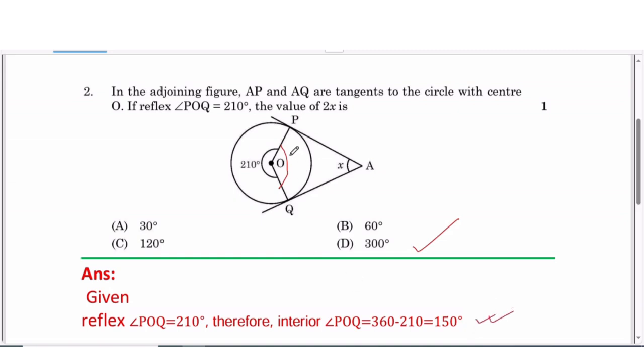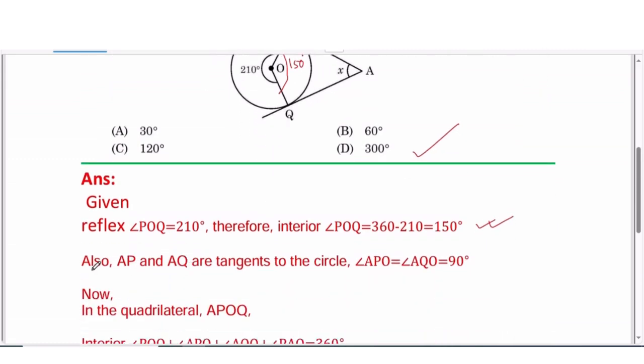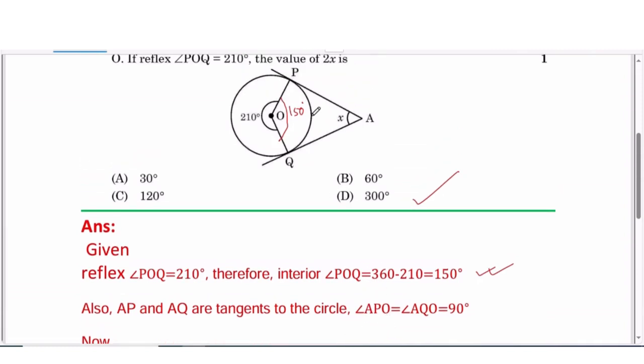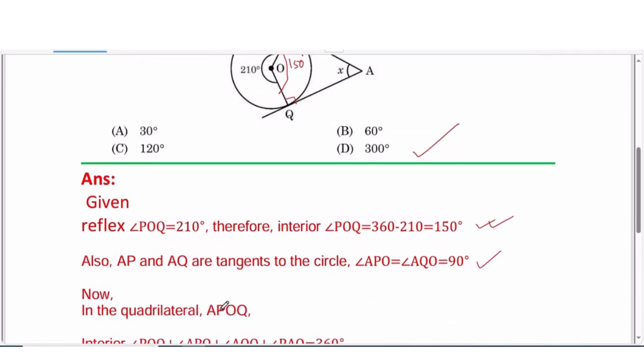Next, it is given that AP and AQ are both tangents to the circle. Therefore angle APO, this angle, and AQO, this angle, will be equal to 90 degrees.